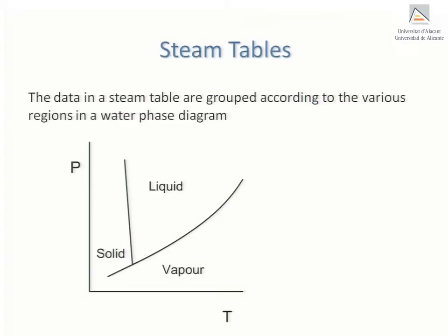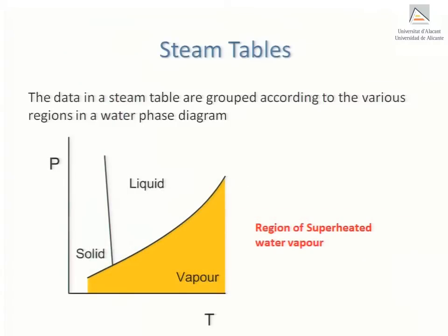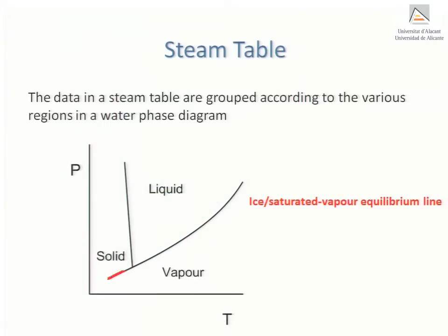For instance, it contains data on saturated water — that is, the points on the red line shown in the accompanying phase diagram — which constitute a pair of values: boiling temperature and vapour pressure. Steam tables also contain data on superheated water, the regions shaded in orange in the accompanying phase diagram. Likewise, they contain data on sub-cooled water, the regions shaded in green, and even data on the ice-saturated vapour equilibrium line.